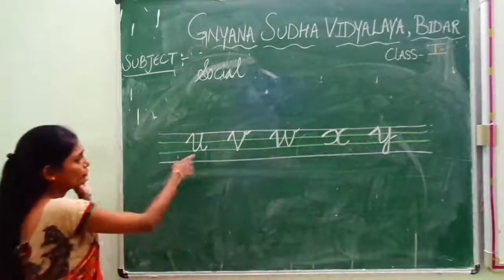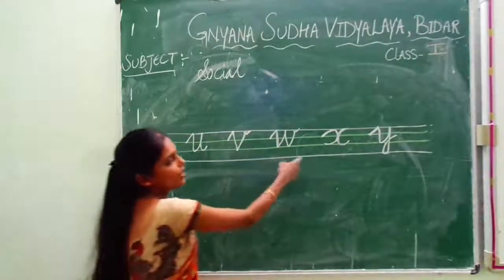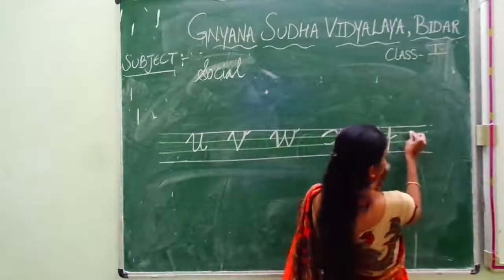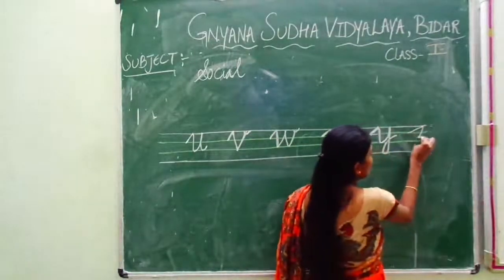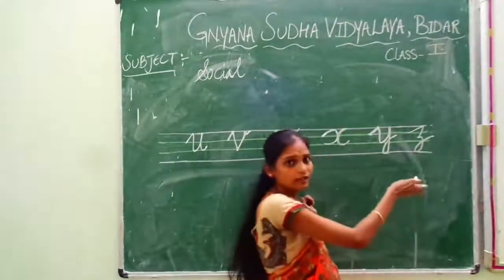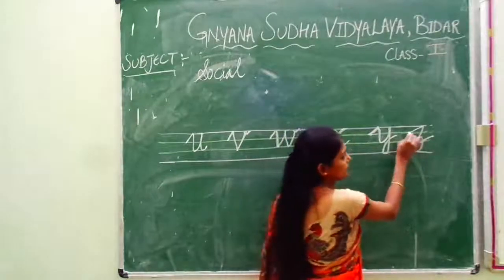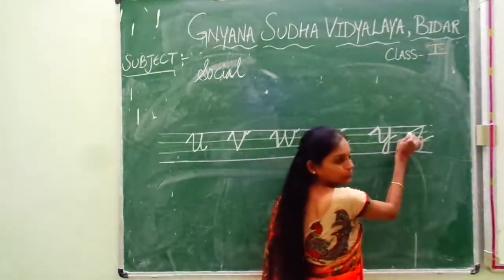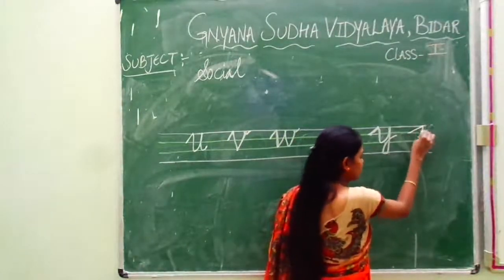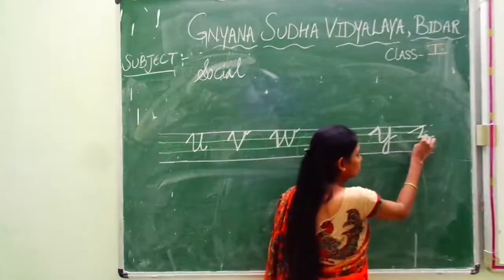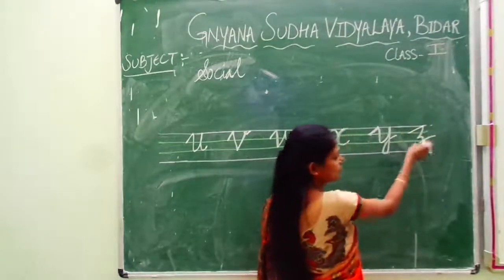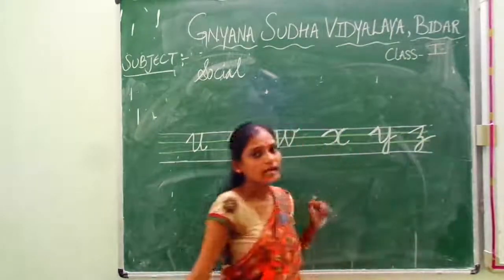So U, V, W, X, Y. Then leave some space and write Z. This is called Z. What is this called? Z. See — start here, blue line, slanting line, come down, again touch pink line, go up. This is called capital Z.